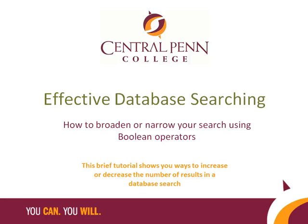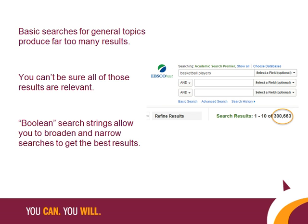This brief tutorial shows you how to increase or decrease the number of results in a database search using Boolean operators. When you do a basic search in a database on a general topic like basketball players, you get far too many results, and you can't be sure that they're all relevant to your topic. This tutorial shows you how to construct Boolean search strings to broaden or narrow your searches and get the best results.